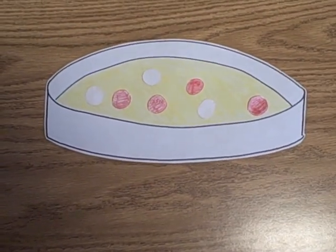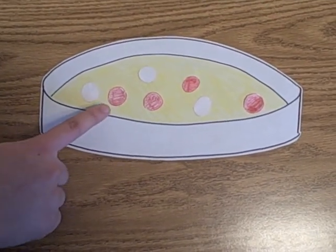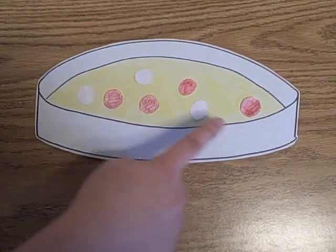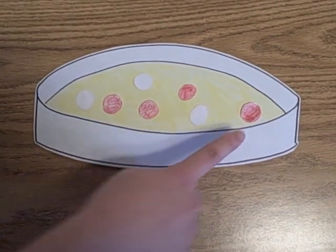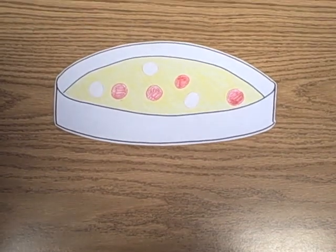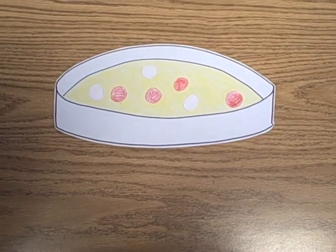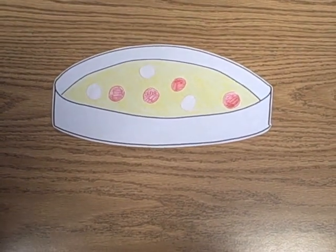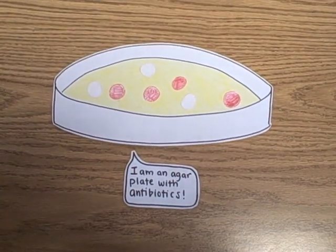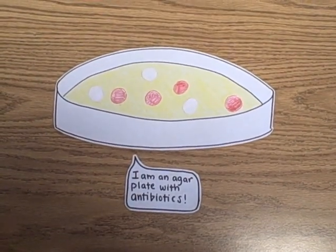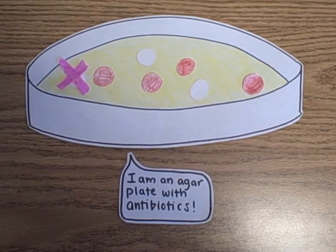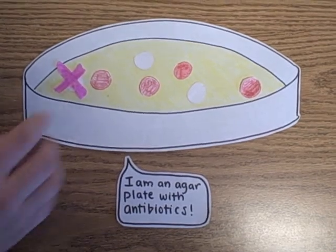At this point, we can identify the bacteria that has successfully incorporated the desired gene. In many cases, antibiotic resistance is included in the plasmid. Taking advantage of this resistance, we can put the bacteria on a plate with antibiotics. The bacteria that survive have successfully incorporated the plasmid.